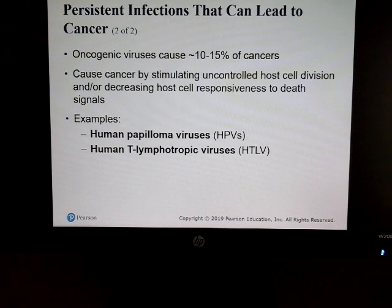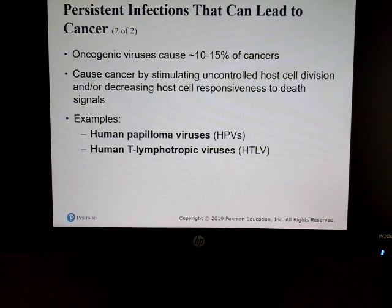Oncogenic viruses can cause about 10 to 15 percent of cancers. Two examples are HPV and HTLV. Interestingly, if you are never infected or exposed to these viruses, you won't develop the types of cancers they can cause.